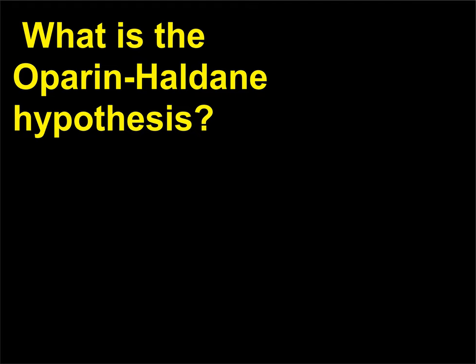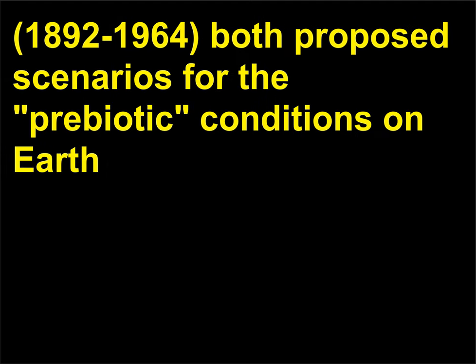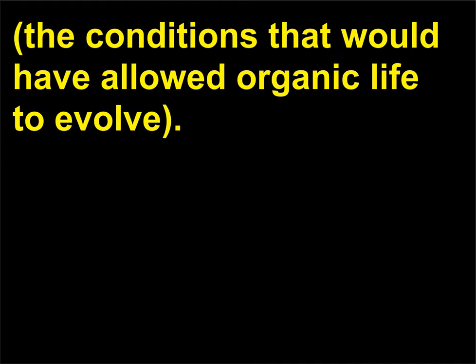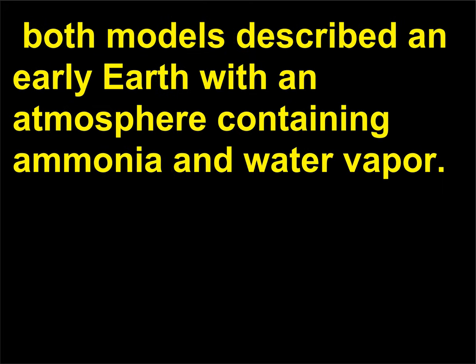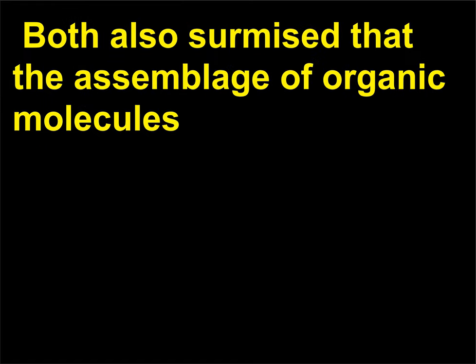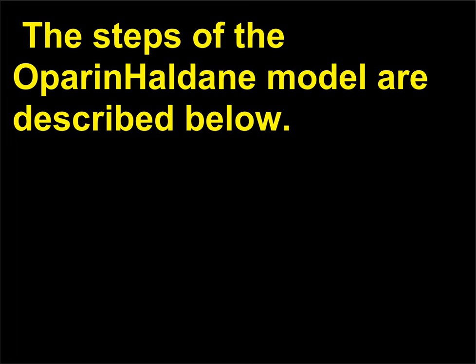What is the Oparin-Haldane hypothesis? In the 1920s, while working independently, Alexander Oparin, 1894 to 1980, and John Haldane, 1892 to 1964, both proposed scenarios for the prebiotic conditions on Earth — the conditions that would have allowed organic life to evolve. Although they differed on details, both models described an early Earth with an atmosphere containing ammonia and water vapor. Both also surmised that the assemblage of organic molecules began in the atmosphere and then moved into the seas.